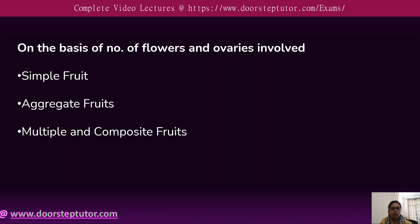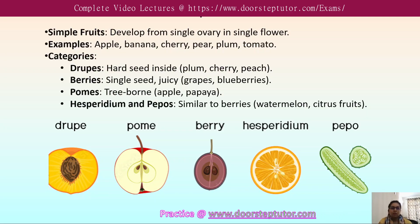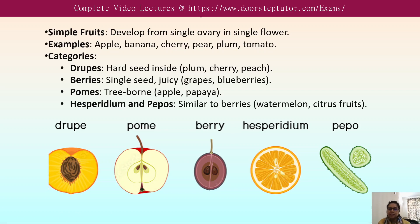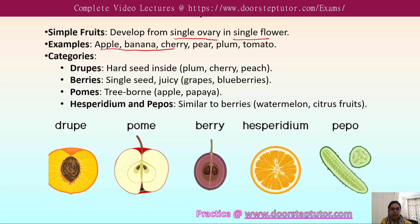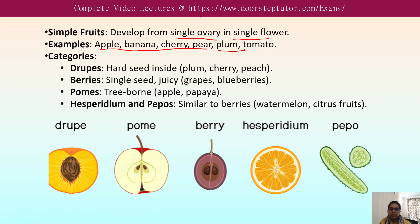On the basis of the number of flowers and ovaries involved, the fruit is classified into three types: simple fruit, aggregate fruit, and composite fruit. These are classifications of the true fruit. Simple fruits develop from a single matured ovary in a single flower. Examples include apple, banana, cherry, pear, plum, and tomato.